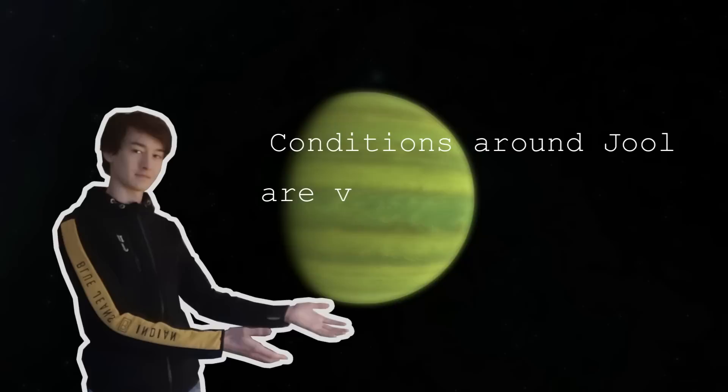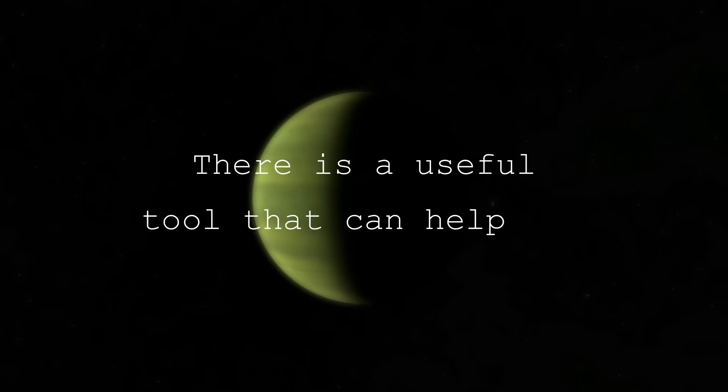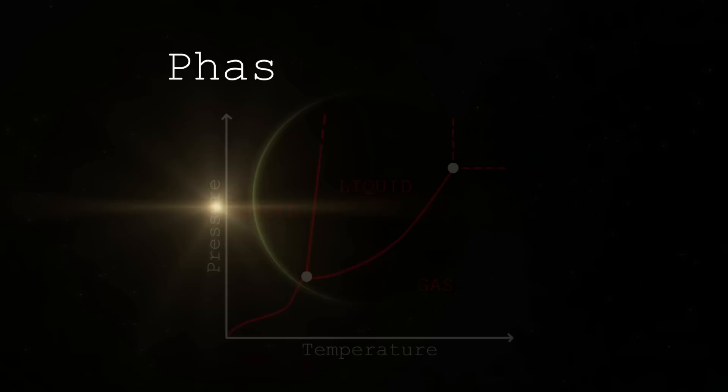Both the temperature and pressure in Joule's atmosphere are very different from Earth and Kerbin. So we cannot just assume that a substance that is a gas here on Earth would also be one on Joule. So to check what the phase of our substance is, you can use a so-called phase diagram.